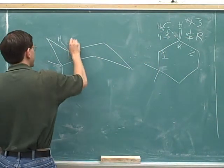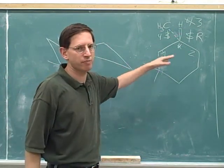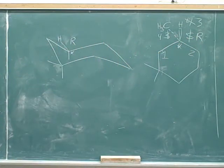So what's the configuration of this stereocenter? R. Remember that if you've correctly translated the chair picture into the flat picture, whatever the configuration in the flat stereocenter, that's going to be the same as the configuration in the chair. That's our trick. So this has an R configuration.